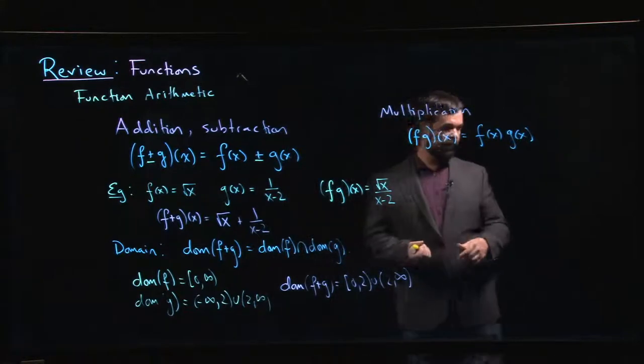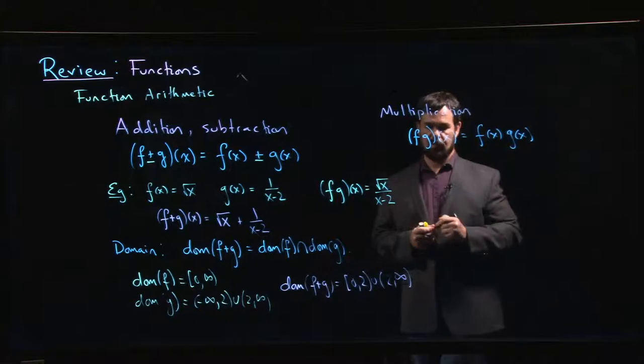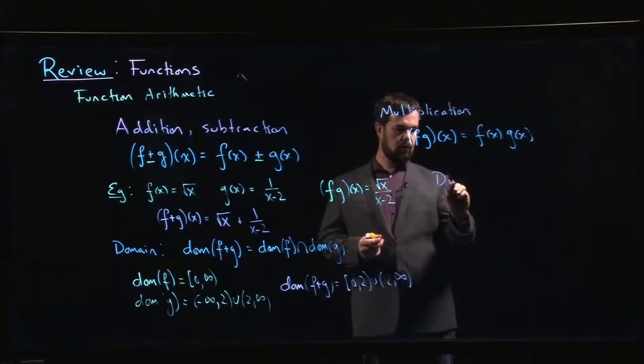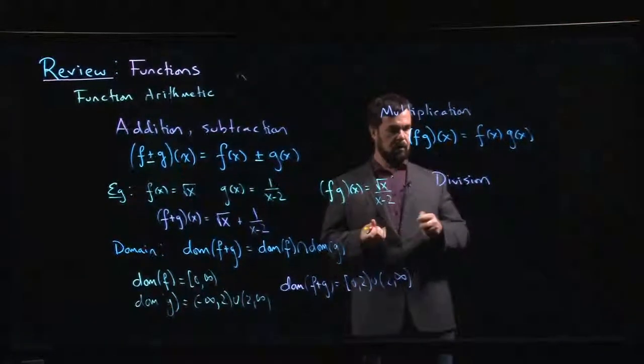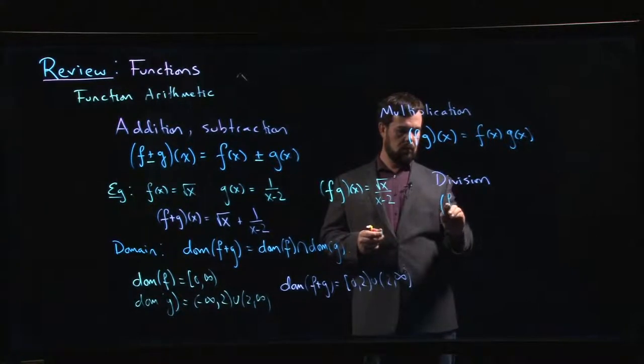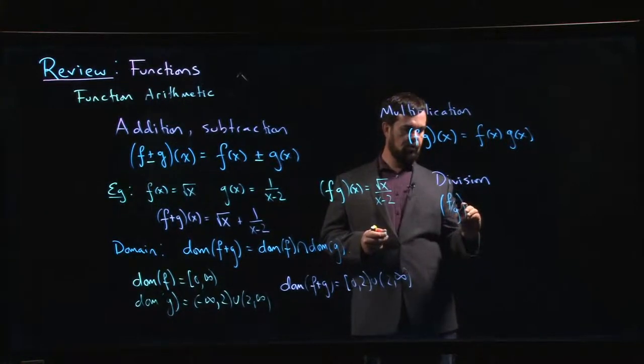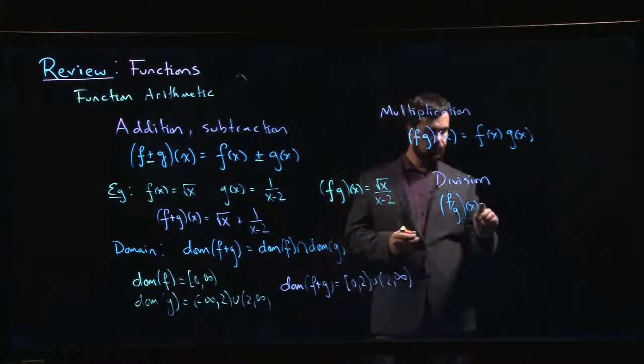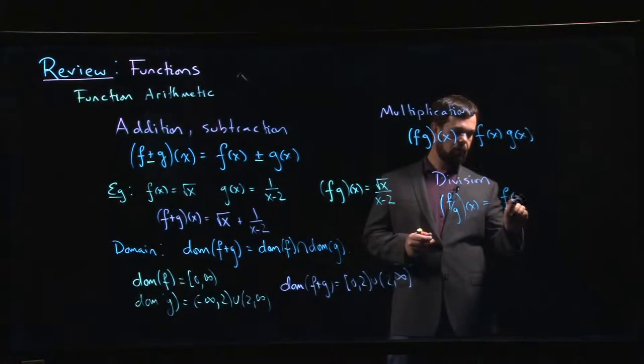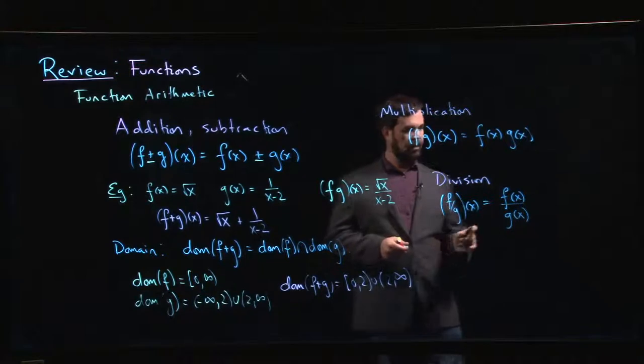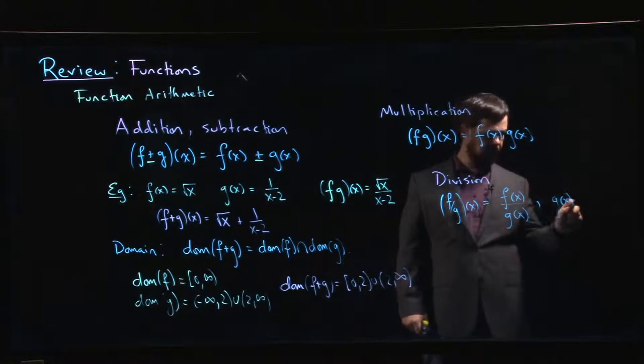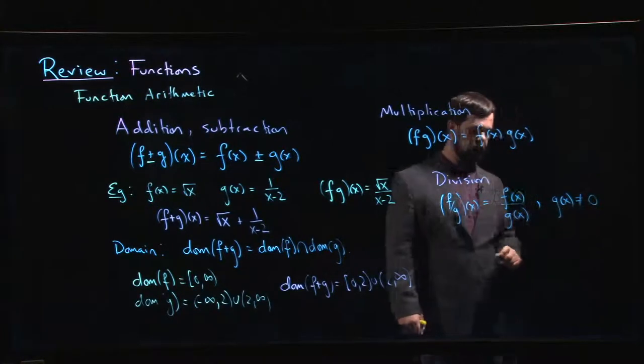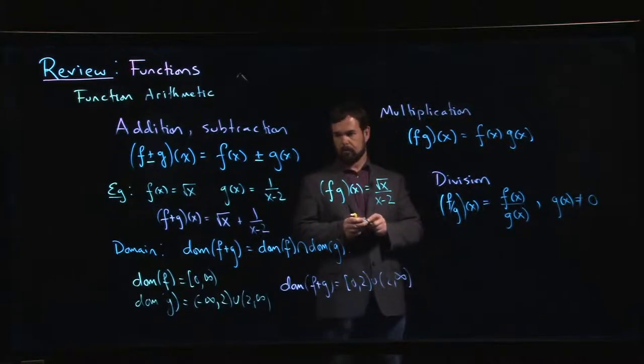The last one is division of these basic operations. And as you might expect, f over g evaluated at x is just going to be f of x divided by g of x. But here we also have an additional domain restriction. Of course, you can't divide by 0, so g of x needs to be non-zero.